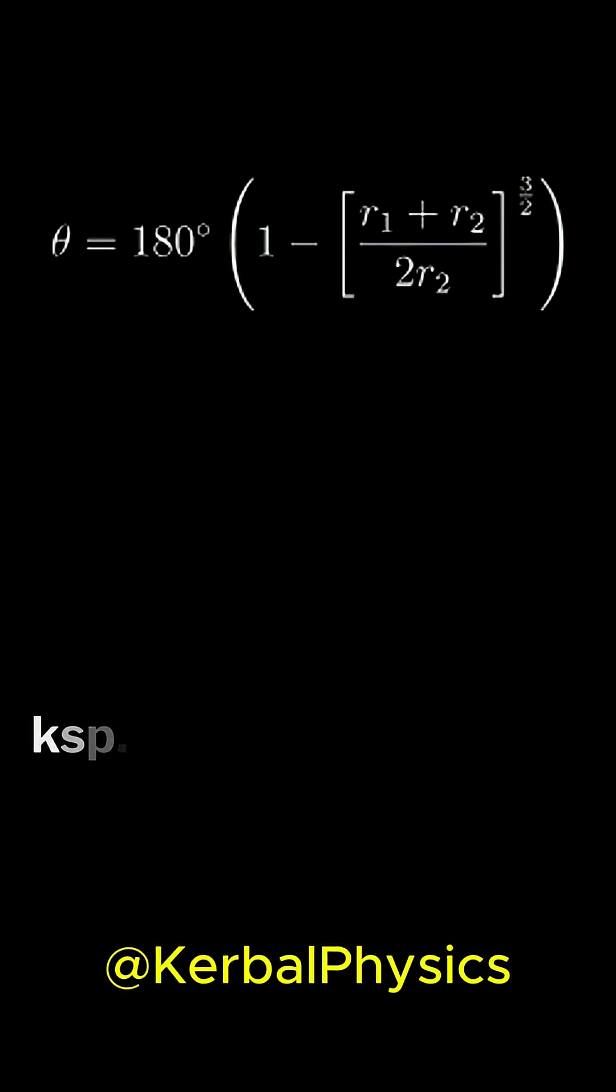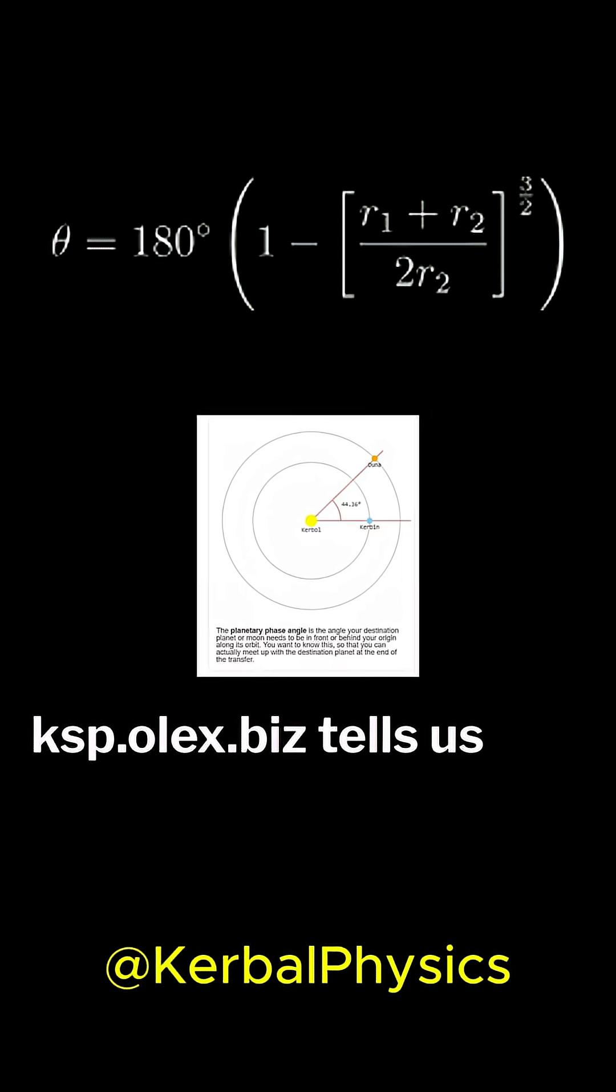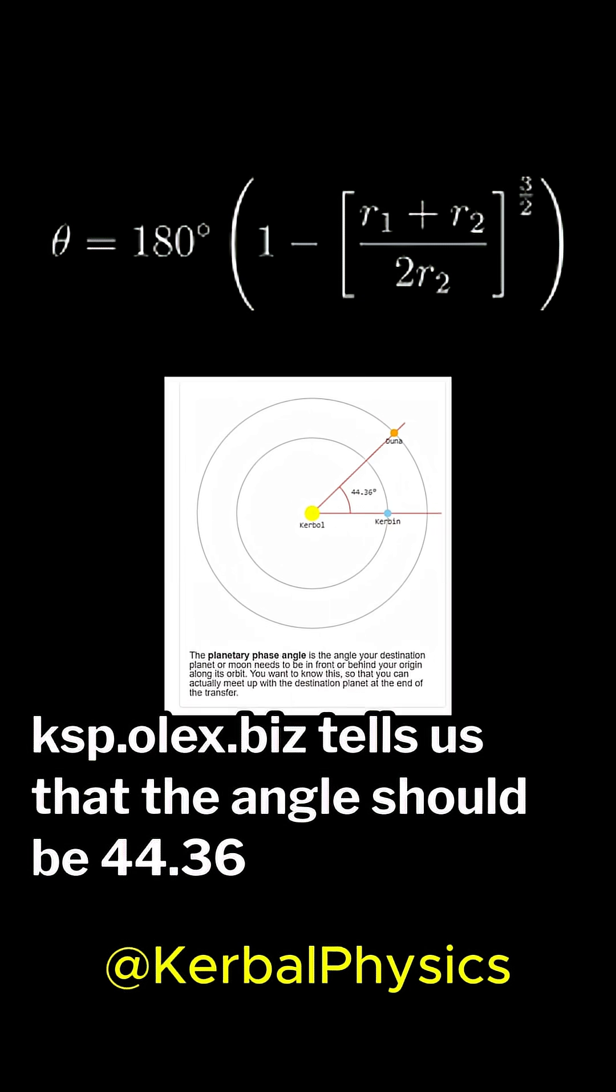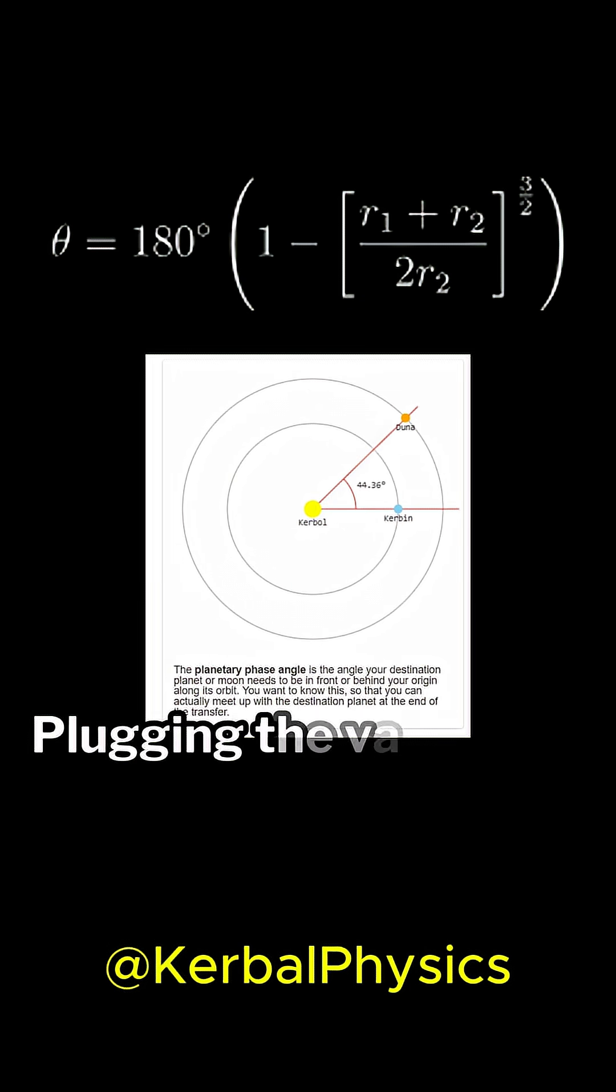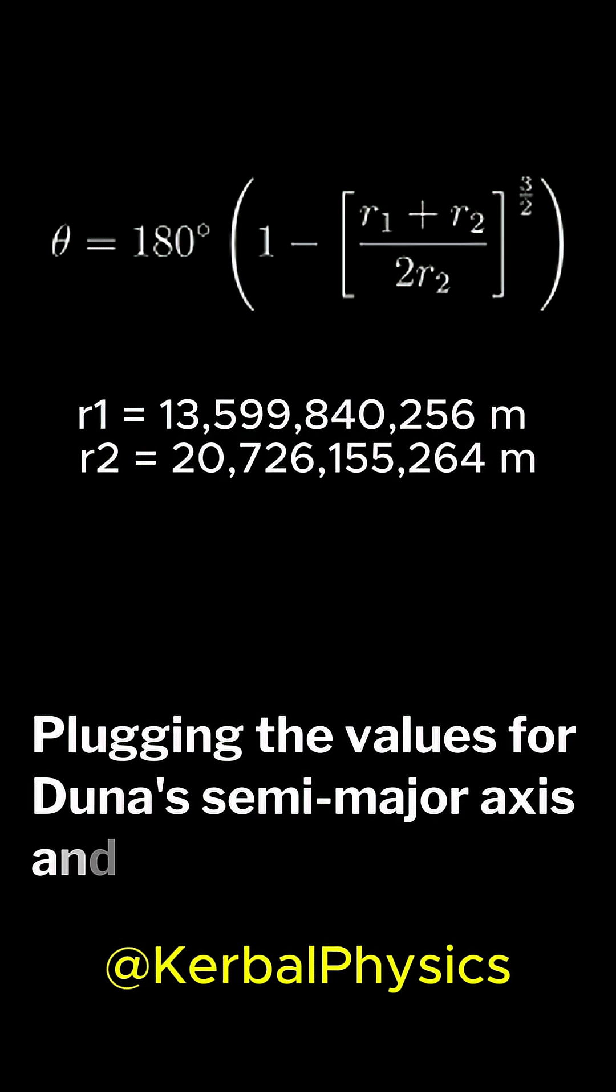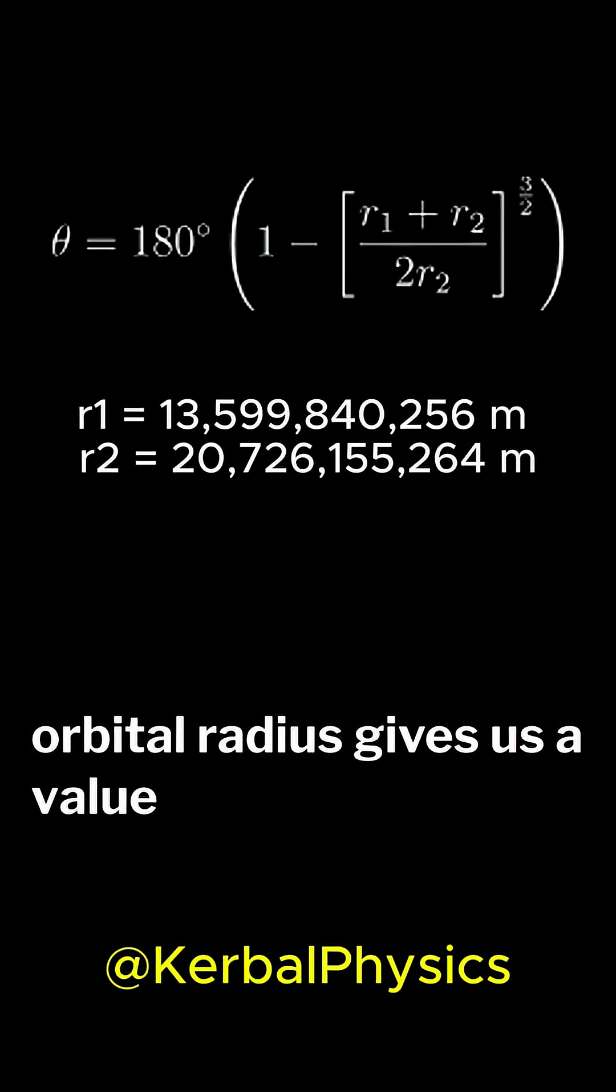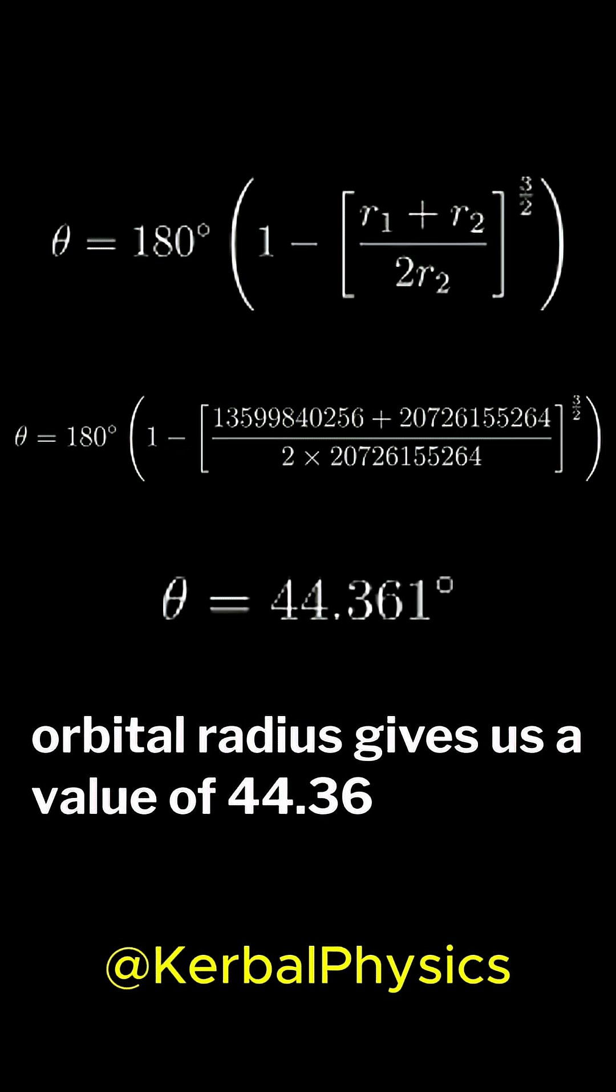For example, let's try Kerbin and Duna. Ksp.olex.biz tells us that the angle should be 44.36 degrees. Plugging the values for Duna's semi-major axis and Kerbin's orbital radius gives us a value of 44.36 degrees.